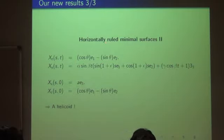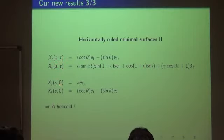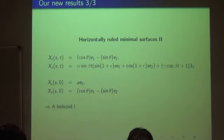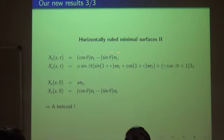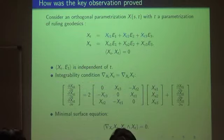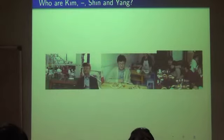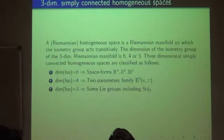For the horizontally ruled minimal case, there are two sub-cases: theta constant and theta non-constant. When theta is constant, we get a specific parametrization — a kind of translation surface where the geodesic direction does not change and it just goes up as translated images. When theta is not constant, the indicatrix curve shows that the geodesic rotates at constant speed and goes up — this is precisely the parametrization of a helicoid. So we have obtained all ruled minimal surfaces in this space.